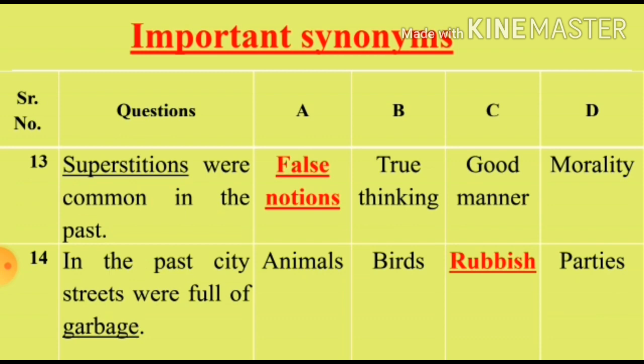Question 14: 'In the past city streets were full of garbage.' We will see the synonym for the word 'garbage'. Option A: Animals (janwar). Option B: Birds (parinde). Option C: Rubbish (kura kirkit). Option D: Parties (party). Options A and B are totally irrelevant. We will select from Option C and D. Option C, Rubbish, is the right answer for Question 14.